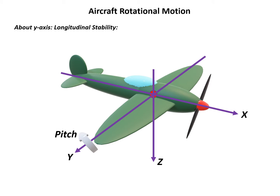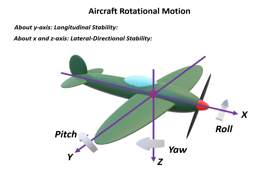If the aircraft rotates about the y-axis, we call it pitch motion, and this concerns the longitudinal stability. If the aircraft rotates about the x-axis, it's called roll motion. If it rotates about the z-axis, we call it yaw motion, and both roll and yaw motion concern the lateral-directional stability.